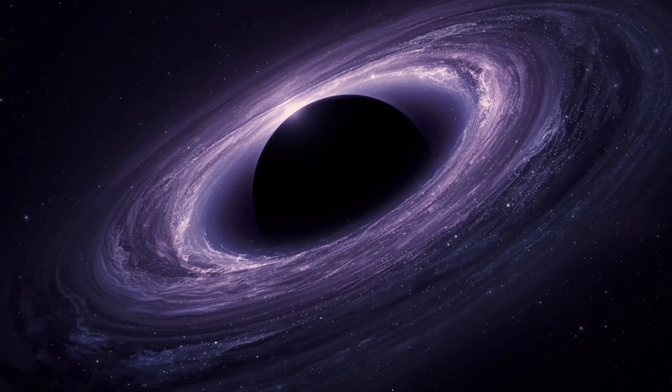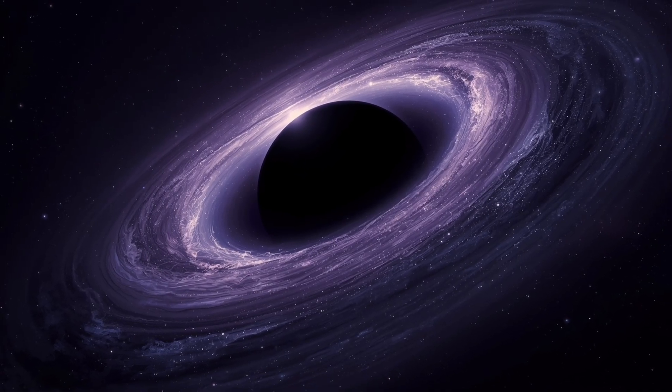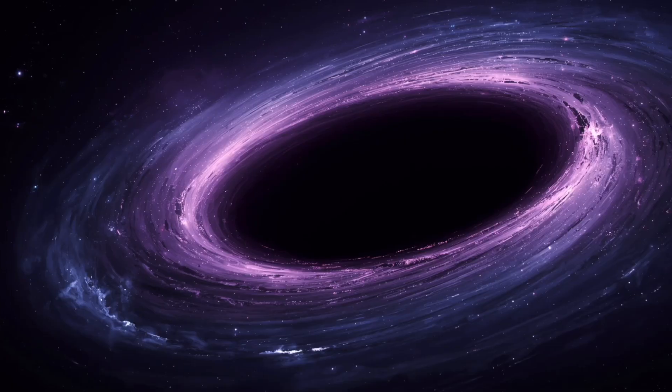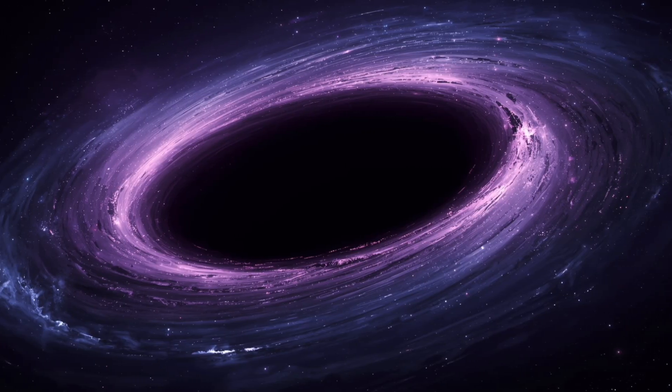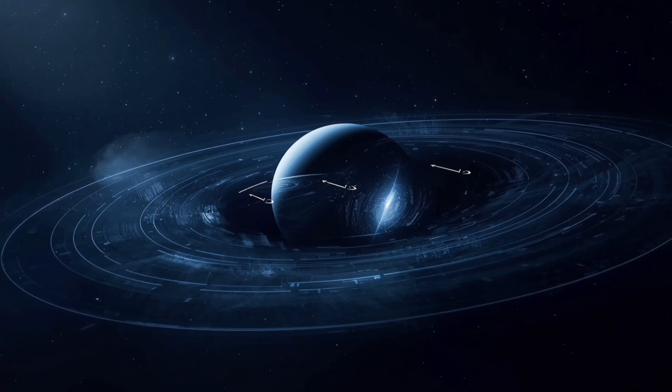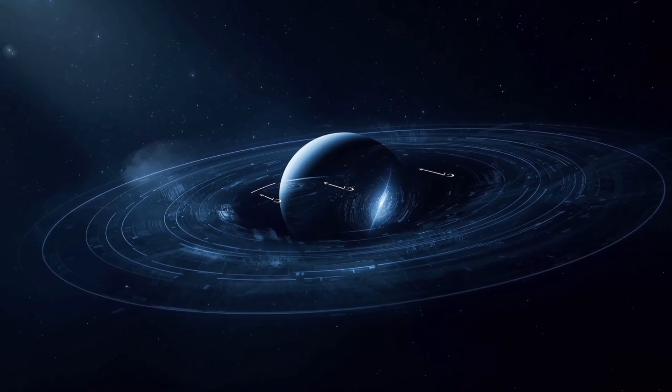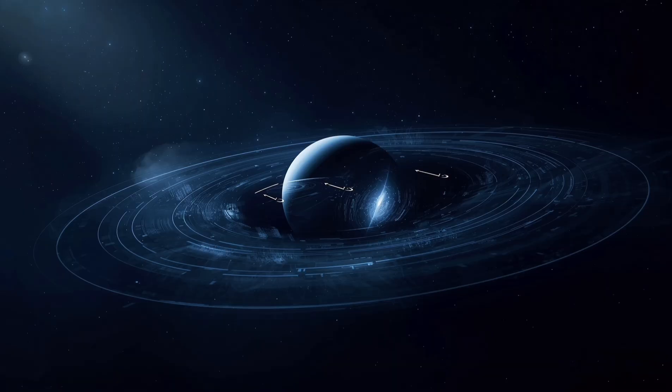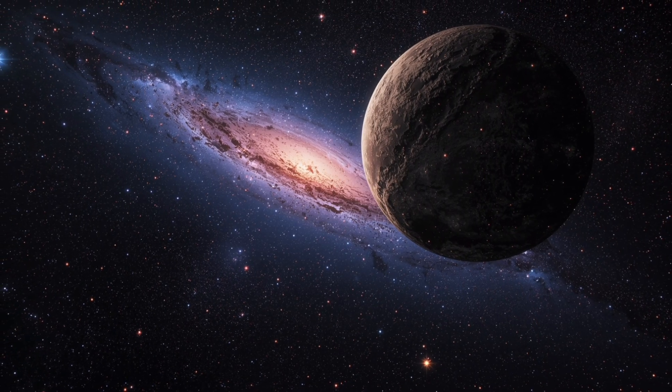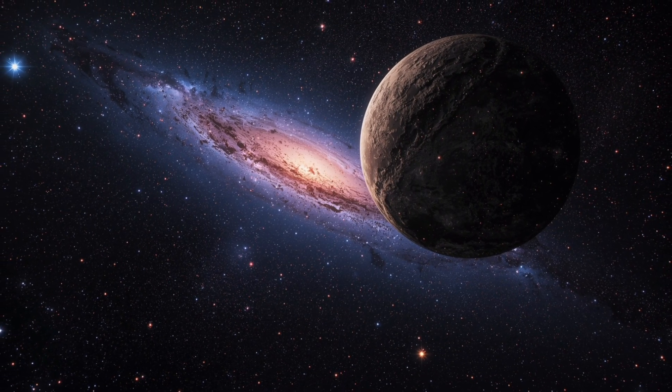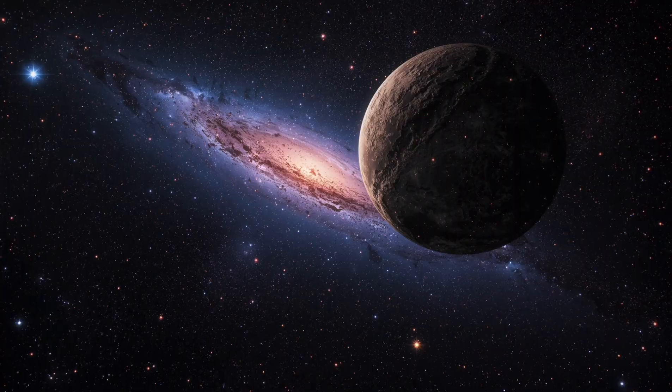The event horizon of Ton 618, the boundary beyond which light cannot escape, is so large that if it were placed at the center of our solar system, its radius would extend far beyond the orbit of Neptune, stretching nearly 200 billion kilometers across. To imagine an object of such size is to confront scales that strain even the most disciplined imagination.